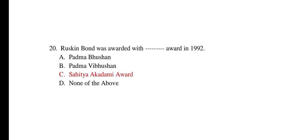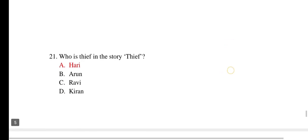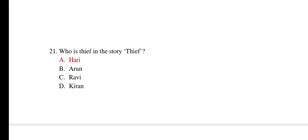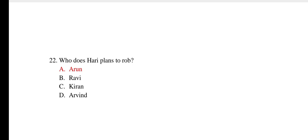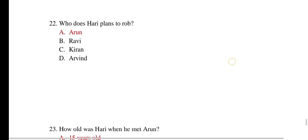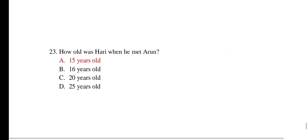The next question is: 'Ruskin Bond was awarded with ___ award in 1992.' He was awarded with the Sahitya Academy Award in 1992. The next question: 'Who is the thief in the story?' The correct answer is Harry. The next question: 'Who does Harry plan to rob?' Harry plans to rob Arun. The next question: 'How old was Harry when he met Arun?' Harry was 15 years old when he met Arun.